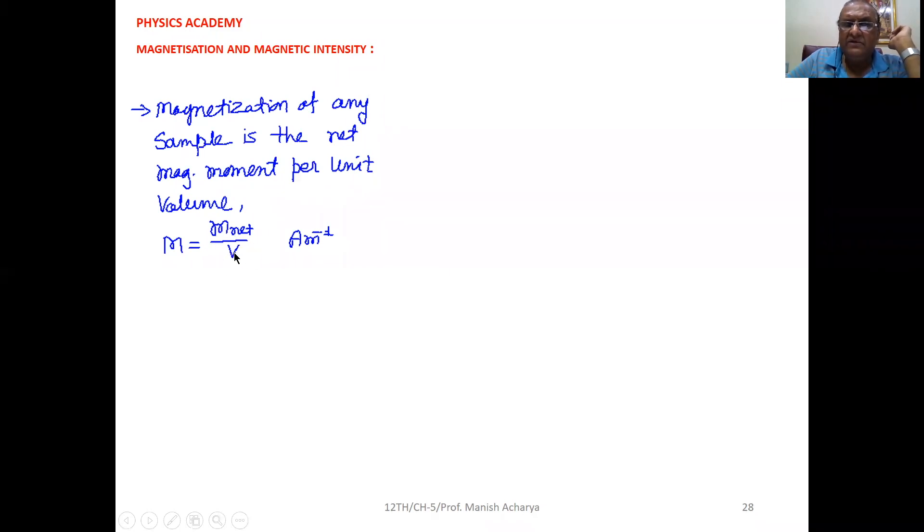M_net upon V, that is the net magnetic moment of the sample per unit volume, and that is called its magnetization.